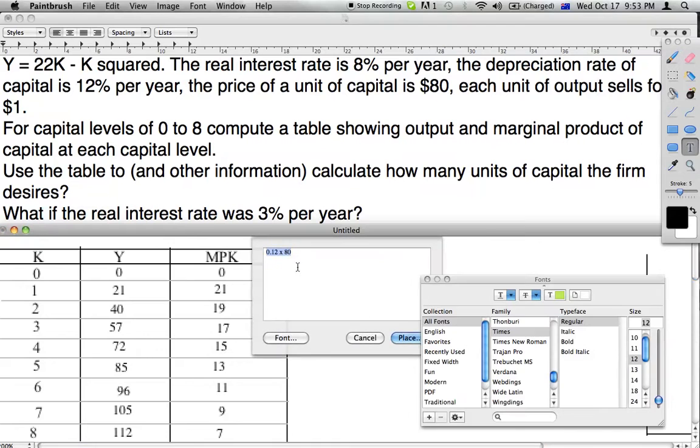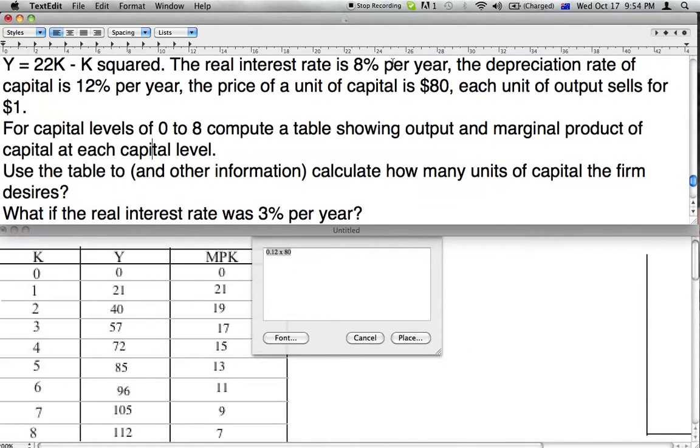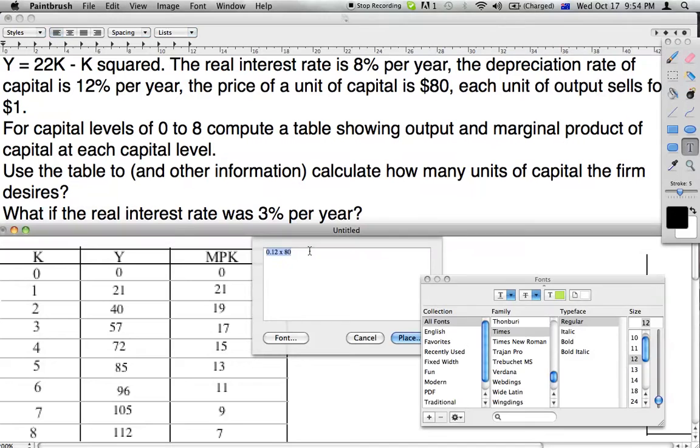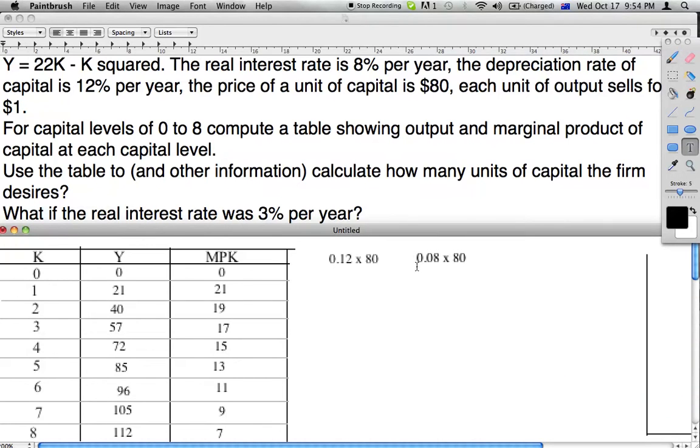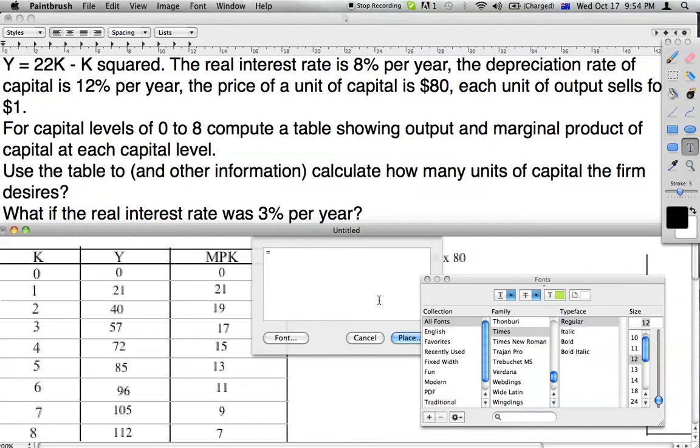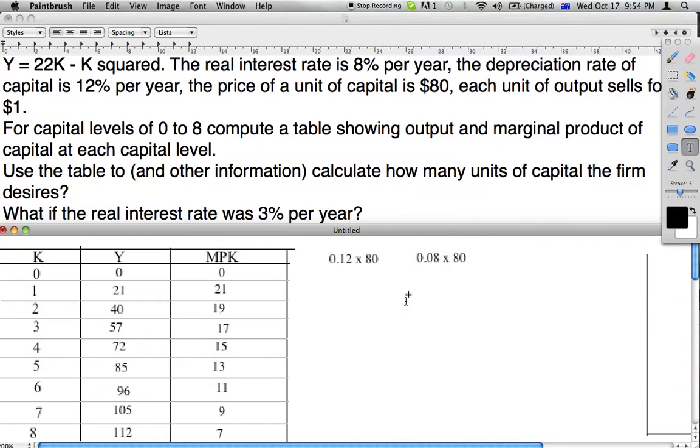We must also include the opportunity cost. What else could we be investing our money in? If the real interest rate on the market is 8%, we could be getting an 8% return. So 0.08 times 80, because that $80 could be invested getting an 8% return. Then we add these together to get our user cost of capital.